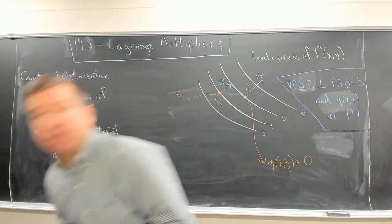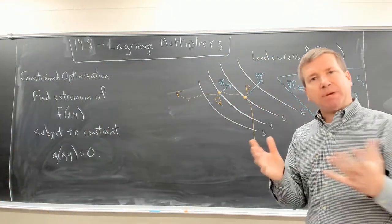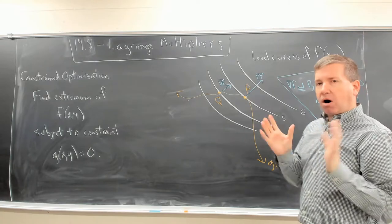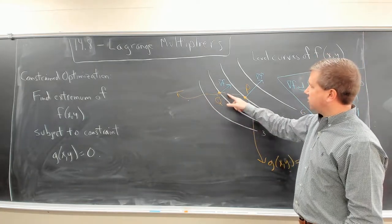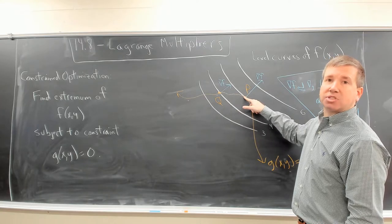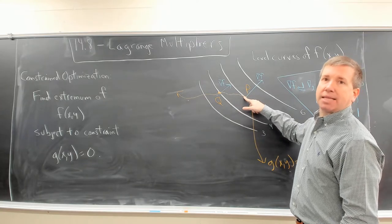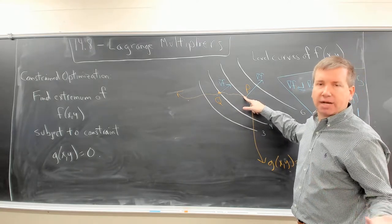There's a theorem that talks about this. I will refer you to it. This is at the bottom of page 809. I'm not going to get too much into detail there. But all I want you to take away from this is the following. We're going to follow the constraint curve until we intersect the highest valued level curve in the case of trying to find a maximum.